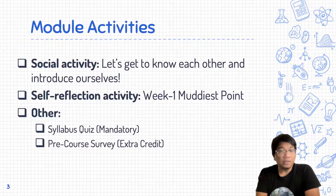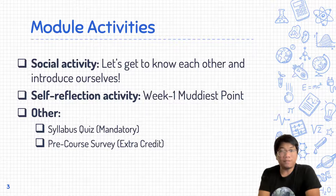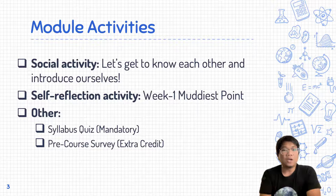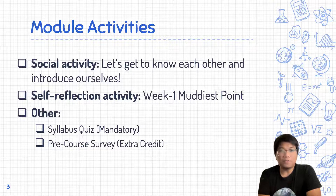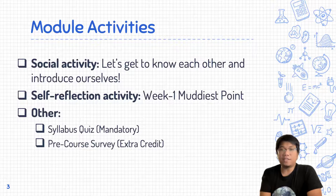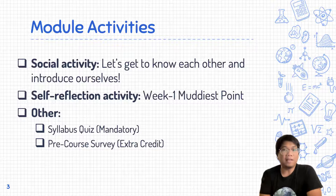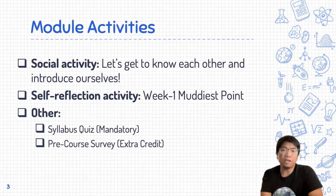There are multiple activities open and available for you this week. The very first one is a social activity — I want all of us to get to know each other and introduce ourselves, so go ahead and do that activity. The second one is the self-reflection activity called the Muddiest Point, which is your first self-reflection of the semester. This activity is available under the first module and also under the Assignment tab on the left side of Canvas.